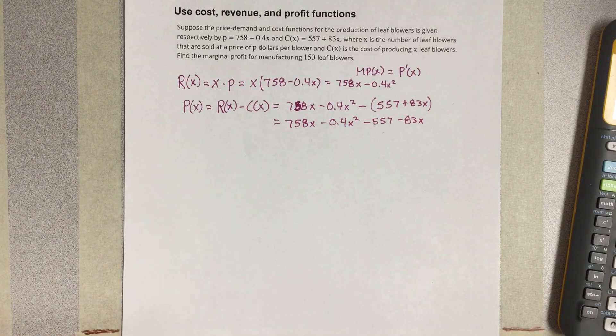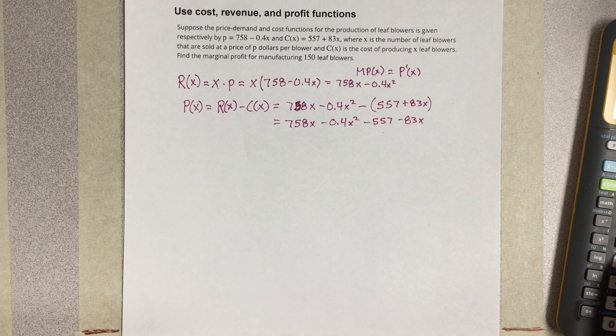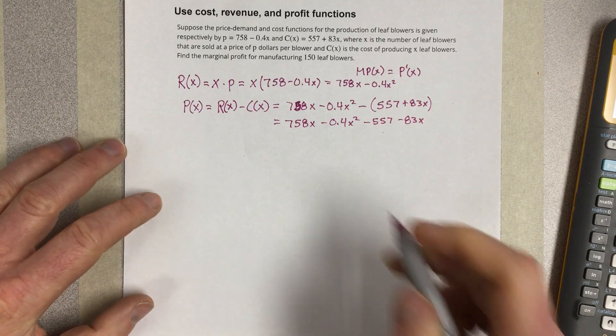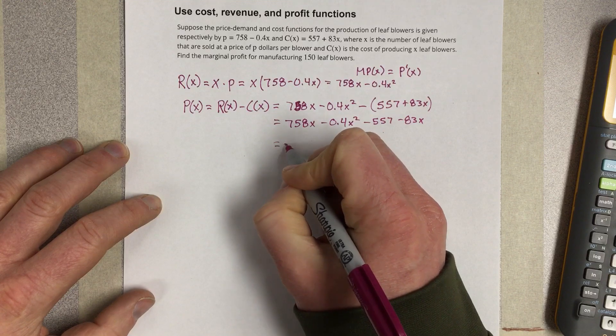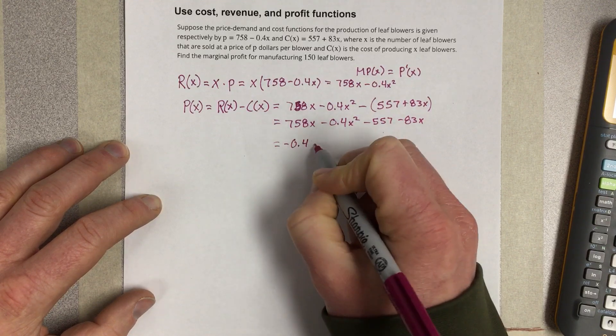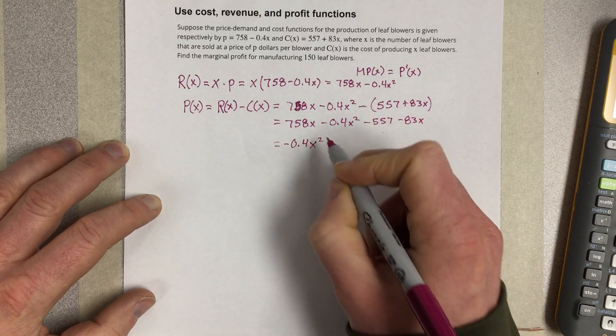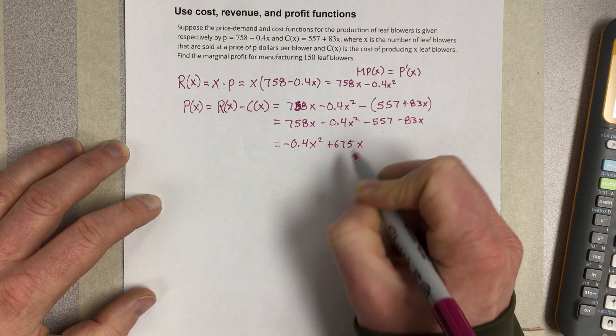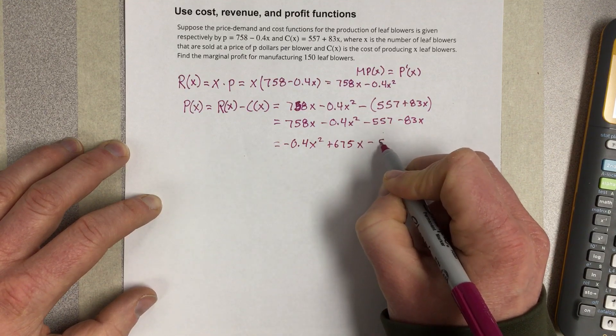Now, let's combine like terms. So we get 758x minus 83x. So we have negative 0.4x squared plus 675x minus 557.